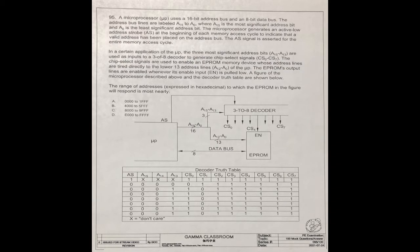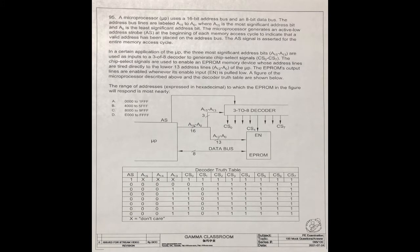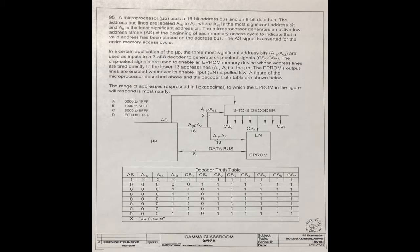In a certain application of the MU-P, the three most significant address bits A15 to A13 are used as inputs to a 3-of-8 decoder to generate chip select signals CS0 to CS7. The chip select signals are used to enable EPROM memory devices, whose address lines are tied directly to the lower 13 address lines, A12 to A0 of the MU-P. The EPROM's output lines are enabled whenever its enable input EN is asserted low.